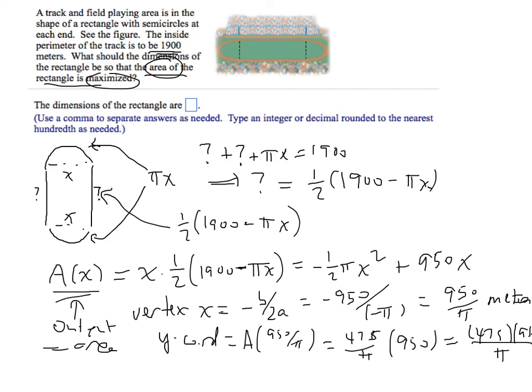That's the solution method. It's not much different than the other problem with the single rectangle, but it certainly looks more complicated because the circular part of the track gives us a pi that keeps showing up in different parts of the equation.